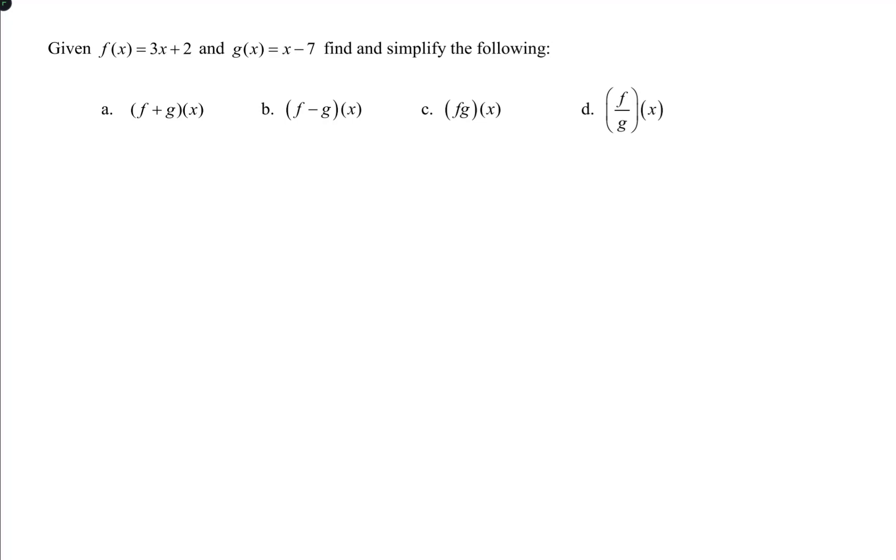Given f(x) = 3x + 2 and g(x) = x - 7, find and simplify the following: a. (f + g)(x).